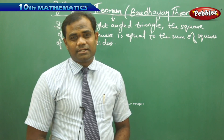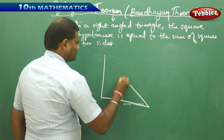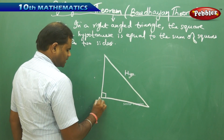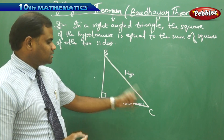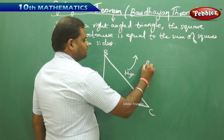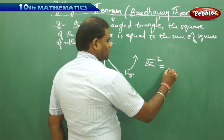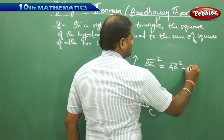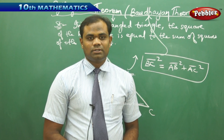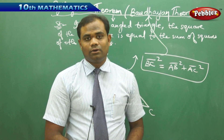So all three sides of the right-angled triangle are associated with: square of hypotenuse equals sum of squares of other two sides. That is what the Pythagoras theorem or Baudayan theorem states. For doing the proof, let's consider a right-angled triangle ABC, where BC is the hypotenuse and the other two sides are AB and AC. The Pythagoras theorem states that BC squared, which is the square of the hypotenuse, equals AB squared plus AC squared.